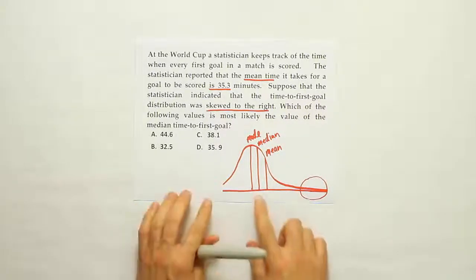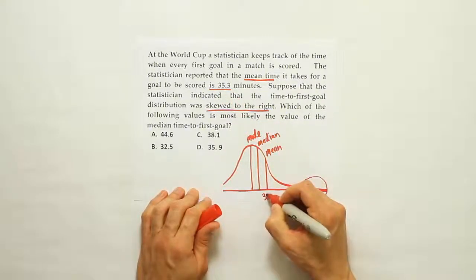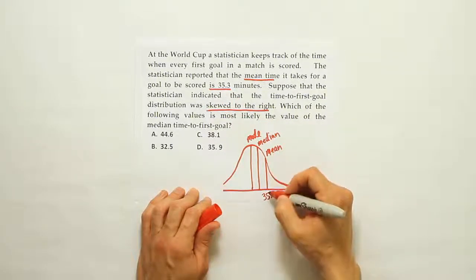Now let's put that information to use. If they tell us that the mean time is 35.3, that'd be here, right? The mean is here, 35.3.